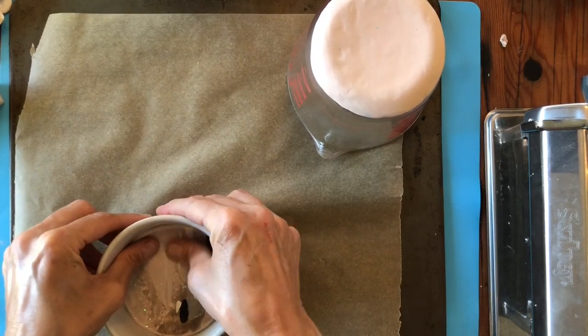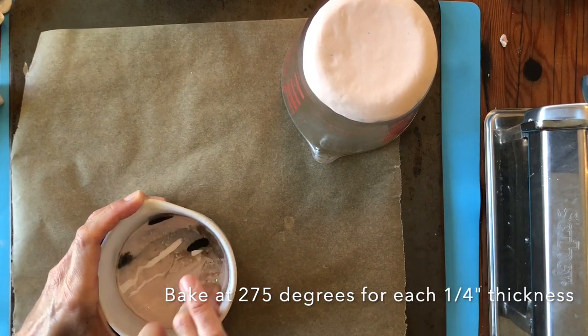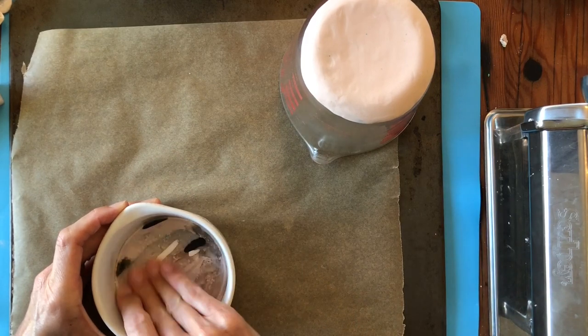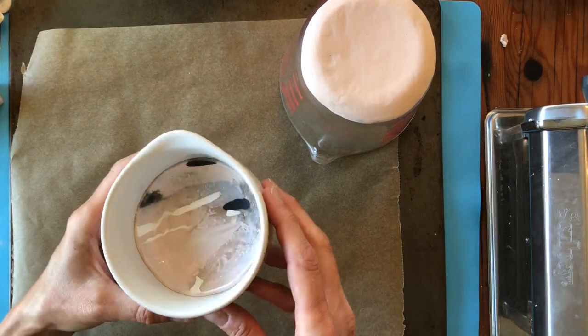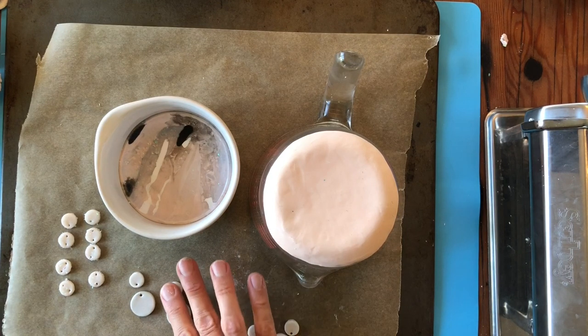When your dishes are ready to bake place them in the center of an oven that's preheated to 275 degrees. For every quarter inch thickness bake for 15 minutes. Parchment paper isn't needed for molds but I usually bake other pieces with the dishes like these earring parts.